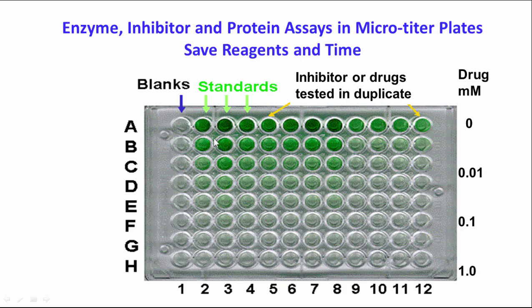Enzyme assays are quite often done in 96-well microtiter plates or even larger ones. These are very useful because you can scan all wells at once — you can do a rate reaction on one well over time and compare it to another. You can have standards and test inhibitors in various other wells. Most labs have microtiter plate readers now, and some can even read A280 if the plate is UV-transparent plastic.